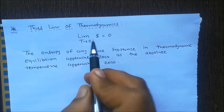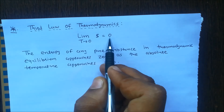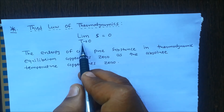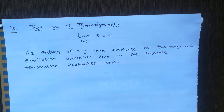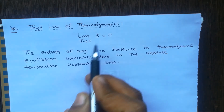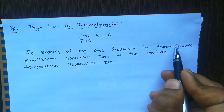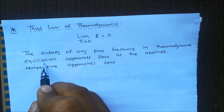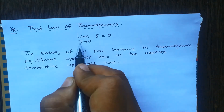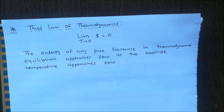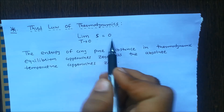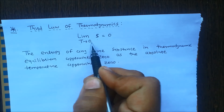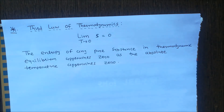Next, the third law of thermodynamics states that as the absolute temperature approaches zero (lim T→0), entropy S approaches zero. The entropy of any pure substance in thermodynamic equilibrium approaches zero as the absolute temperature approaches zero.